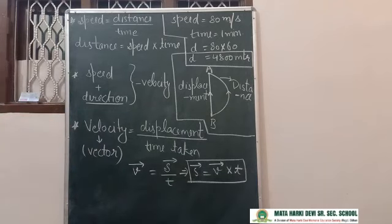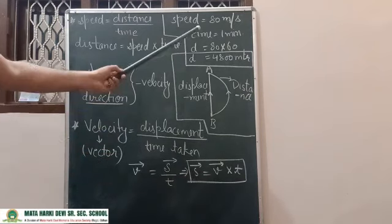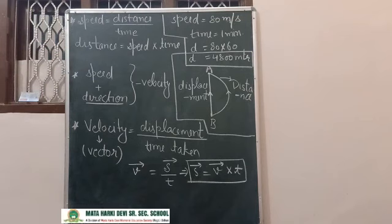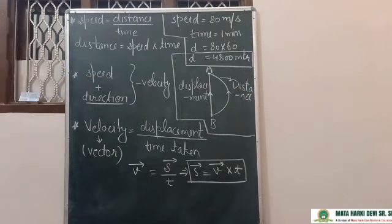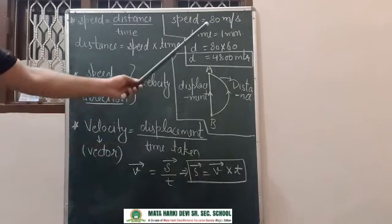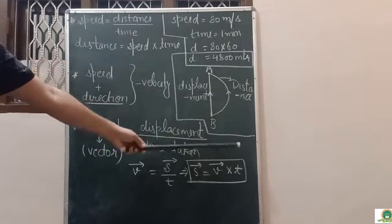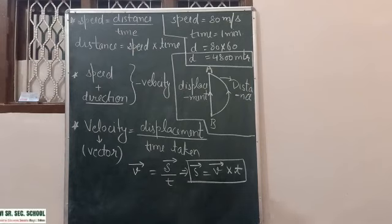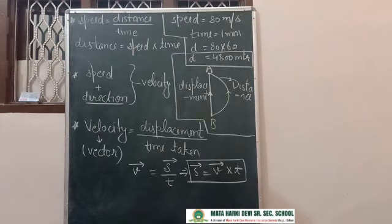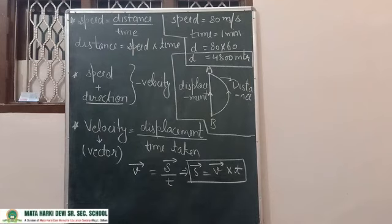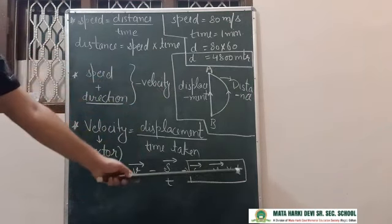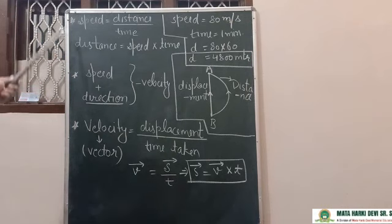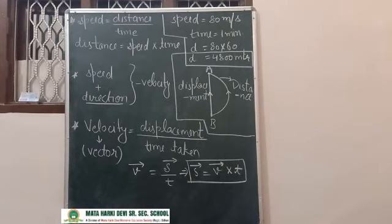Using the formula: displacement equals velocity multiplied by time. If speed is 80 metres per second towards north and time is 1 minute — convert to 60 seconds — then displacement equals 4800 metres towards north. The direction 'towards north' is what gives us velocity. So the displacement is 4800 metres towards north. In further lectures we will cover average velocity and acceleration. Thank you very much.